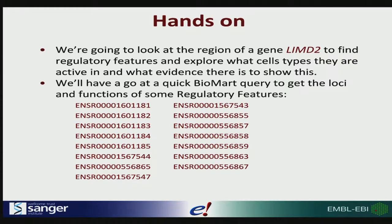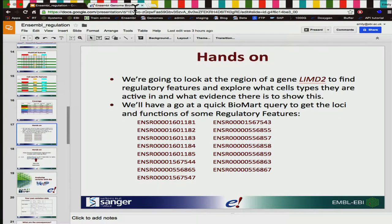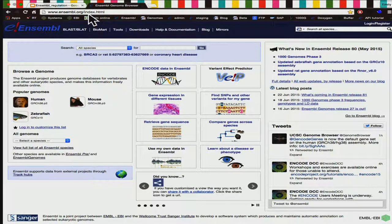I want to show you how you can see this kind of data in Ensembl and what you can learn about it. We're going to start by looking at the region of a gene, see the regulatory features and their activity in different cell types, and what evidence there is to show this. We'll also have a go at a quick BioMart query and get the locations and functions of some regulatory features. All of these features have an ID that looks like ENSR followed by an 11-digit number — ENS telling you it's Ensembl, R telling you it's a regulatory feature.